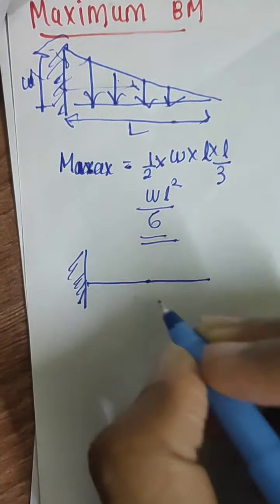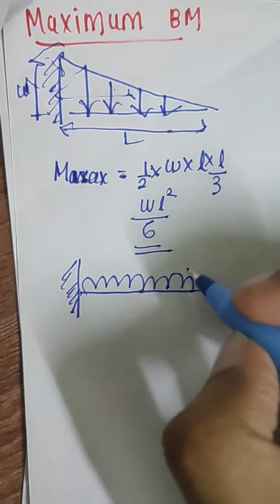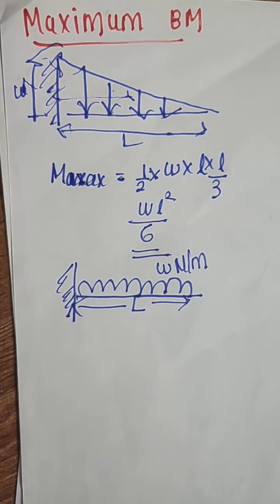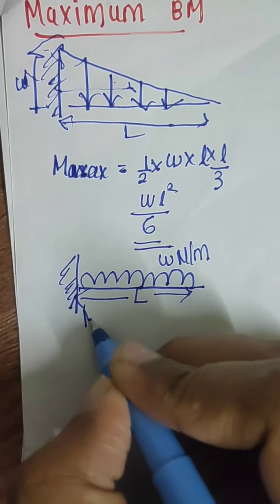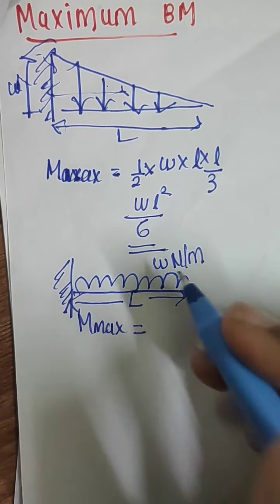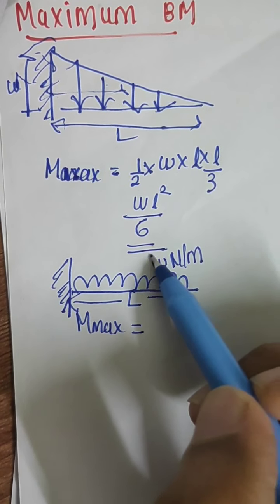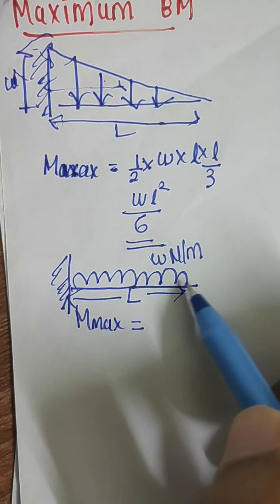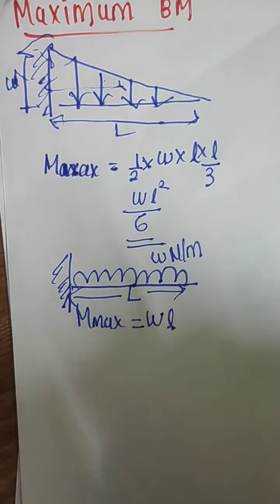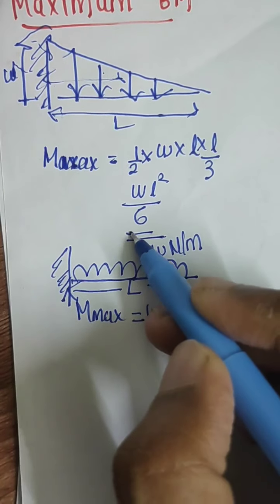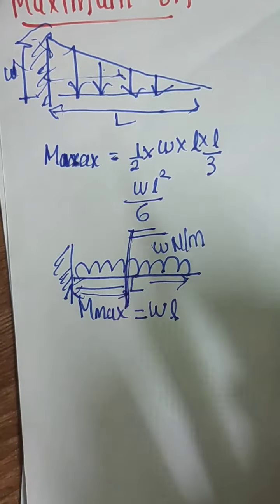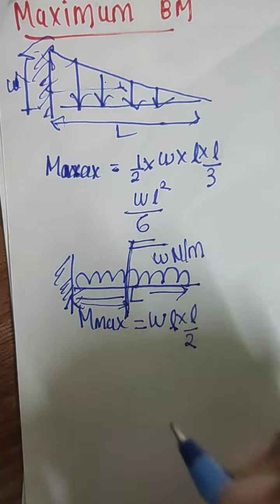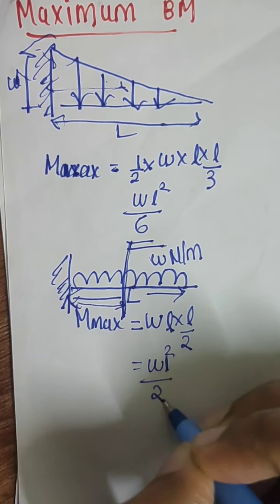Now consider a cantilever — one end fixed, one end free — carrying a UDL of w Newton per meter over length l. The total force is w × l, acting at the midpoint l/2. So the maximum bending moment at the fixed end is w × l × l/2 = wl²/2.